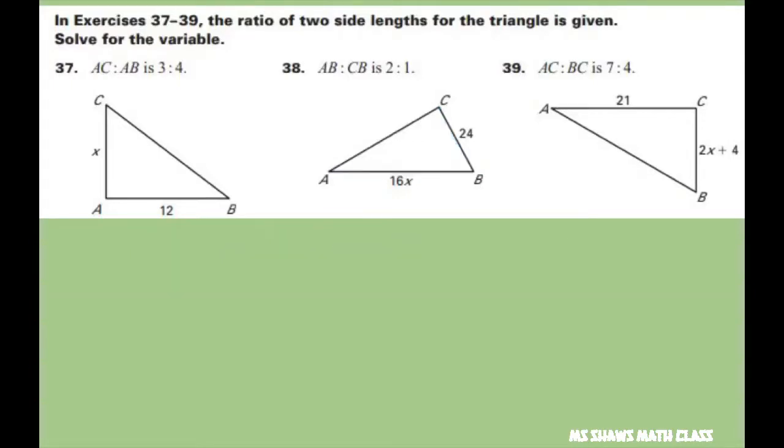And the last one. AC to BC is 7 to 4. Okay. So AC right here is 21. That's in the numerator. And BC here is 2X plus 4.